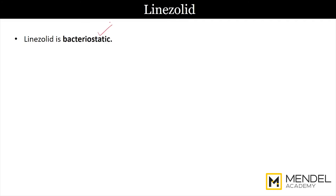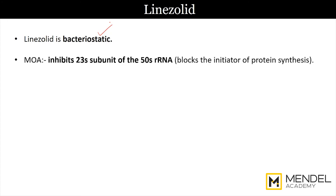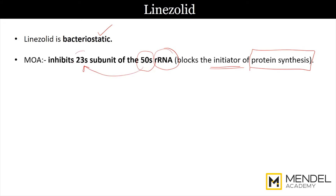Linezolid is bacteriostatic. Its mechanism of action is inhibition of protein synthesis — it blocks the initiation of protein synthesis. Specifically, in the 50S rRNA, there is a subunit called the 23S rRNA, and this is what is blocked by linezolid. That is again a very high yield point.